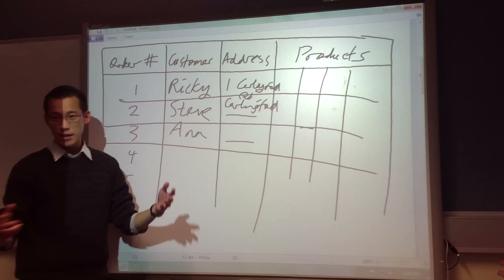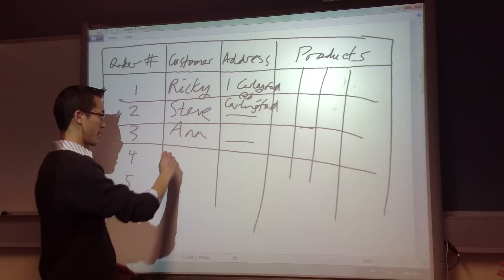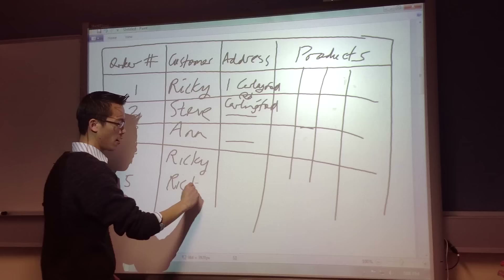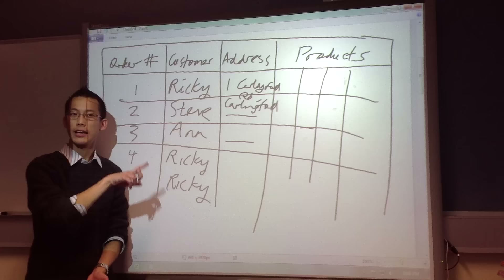Suppose Ricky decides the products are really good, so he comes back and orders another thing, then another, and Steve and others keep ordering again and again. Can someone tell me — what's the problem with this scenario?